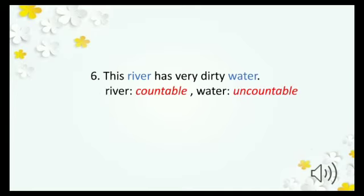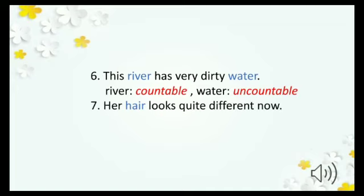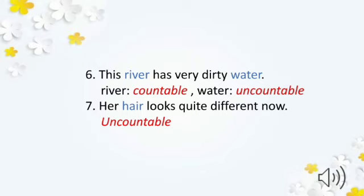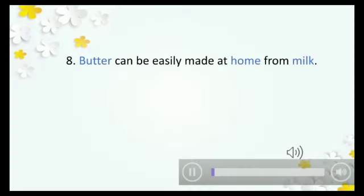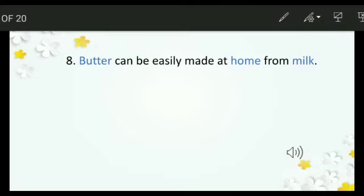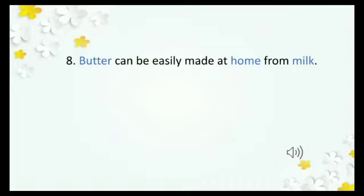Number six: 'This river has very dirty water.' River (دریا) can be counted — countable. Water cannot be counted — uncountable. Number seven: 'Her hair looks quite different now.' Hair cannot be counted — uncountable. Number eight: 'Butter can be easily made at home from milk.' Butter cannot be counted — uncountable. Milk cannot be counted — uncountable. Home can be counted — countable.